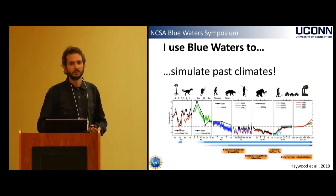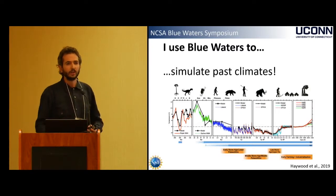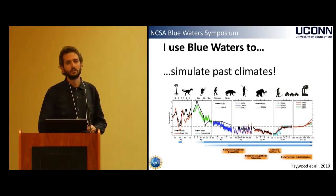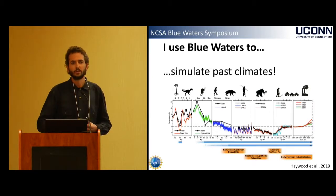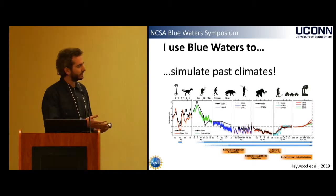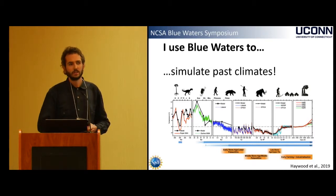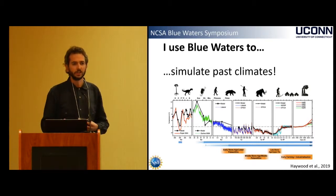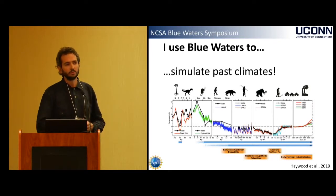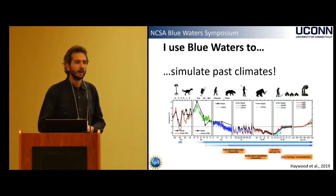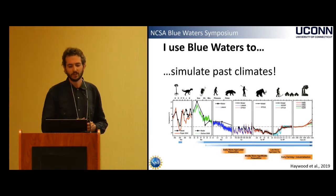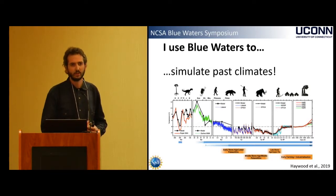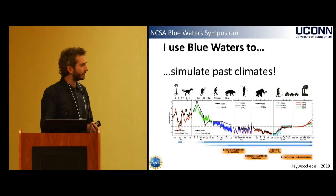Fortunately, we have millions of years of Earth's history to look back upon for different climate states. We use proxy records to reconstruct things like past temperature and precipitation, and then we can use these models with boundary conditions of past climate states to see how well they simulate very different climate regimes. If the models do a good job in past warm and cold states, it'll give us confidence that the parameterizations are doing a good job for the future. If there are disagreements, we can look at what forcings or parameterizations might be leading to those disagreements.